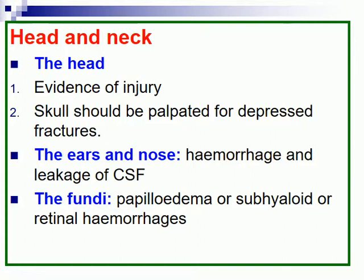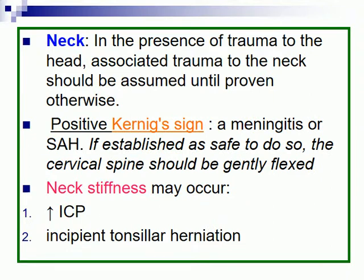Evidence of injury: the skull should be palpated for depressed fractures. The eyes and nose should also be assessed for haemorrhage and leakage of cerebrospinal fluid. Assess the fundi for papilloedema and subhyaloid or retinal haemorrhage. Neck: in the presence of trauma to the head, associated trauma to the neck should be assumed until proven otherwise. Positive Kernig's sign suggests meningitis or subarachnoid haemorrhage.